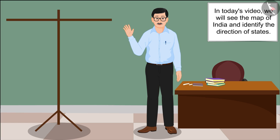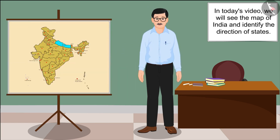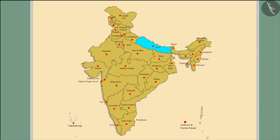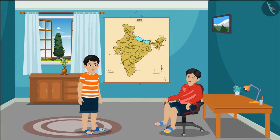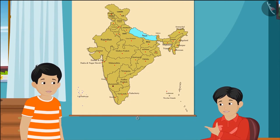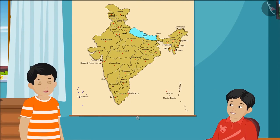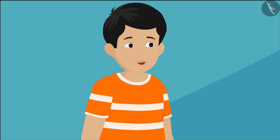Hello friends! In today's video we will see the map of India and identify the direction of states. Here are Raju and Govind, who hail from Madhya Pradesh. Both of them are very excited about their school holidays.